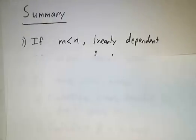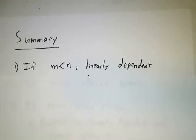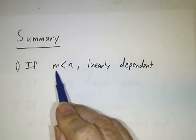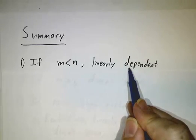Okay, so let's see what happens if there's a summary. We're talking about n vectors in R^m. If you have lots of vectors in a small space, like five vectors in R^4, they must be linearly dependent.